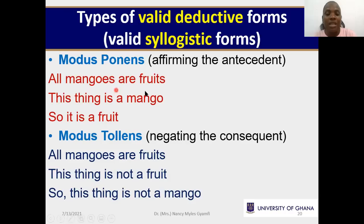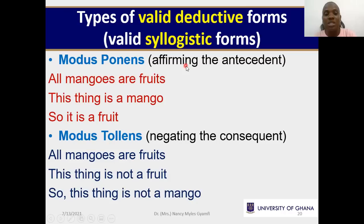Modus ponens — recall what we did earlier. We'll just touch on it and move on. Modus ponens is a valid form also called affirming the antecedent. The antecedent is the first part of your conditional. For example: all mangoes are fruits. I can open that as: if X is a mango, then X is a fruit. When you open it out that way, you see it as a conditional.